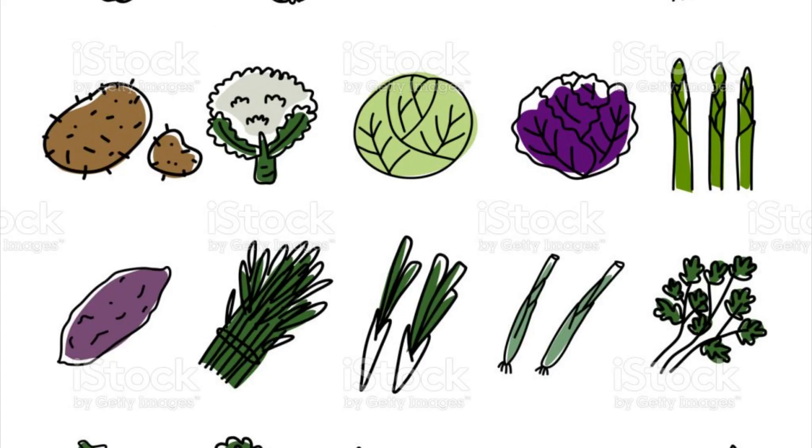Plants also store starch in fruits such as apples, banana, peaches, broccoli, and cauliflower, as well as in roots such as carrots and beetroot.